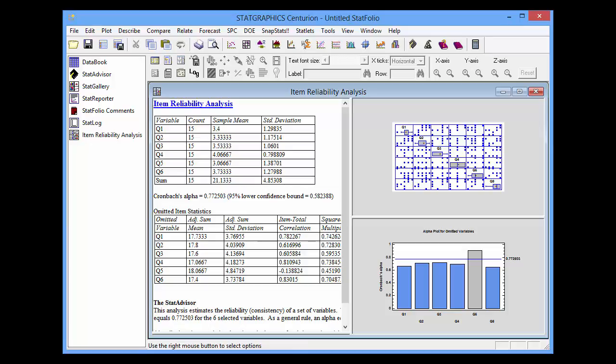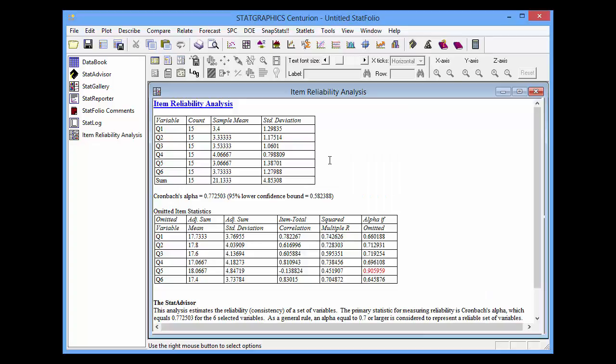The key output is in the analysis summary. In particular, I'll be looking at the value for Cronbach's alpha. It is in this case 0.77, with a 95% lower confidence bound of about 0.58.